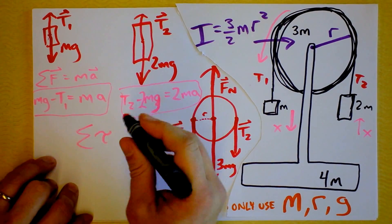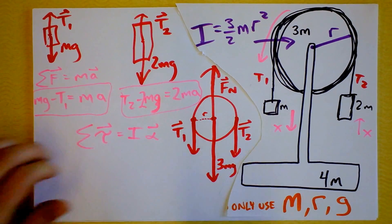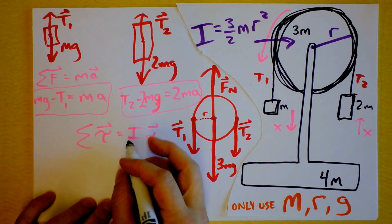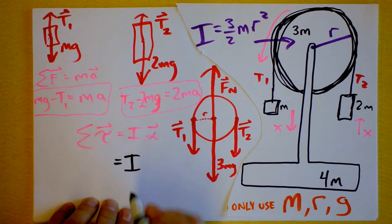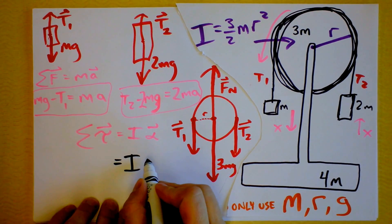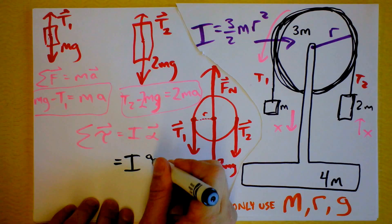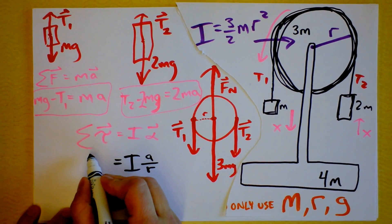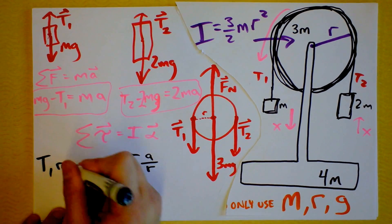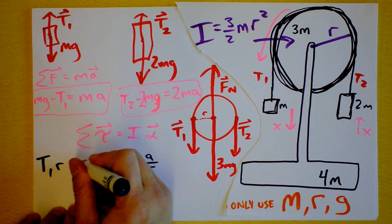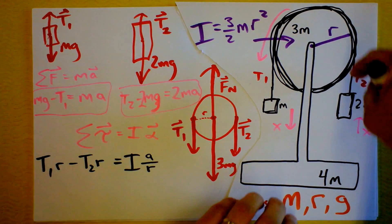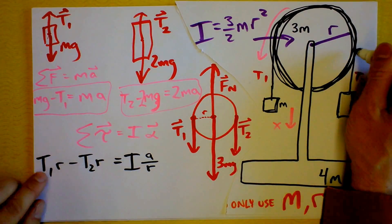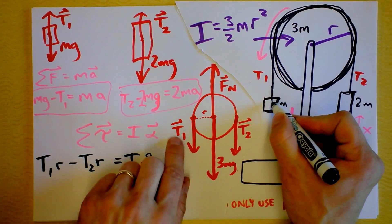This pulley's statement of Newton's second law is that the net torques equal I times alpha — that's Newton's second law for rotations. I'll leave the moment of inertia as I but we know what it is, and we know alpha is related to a: instead of alpha I'll write a over R, where R is the radius of our spinning thing. Then looking at the net torques: I've got one positive torque, T1 times R, and a negative torque, T2 times R.